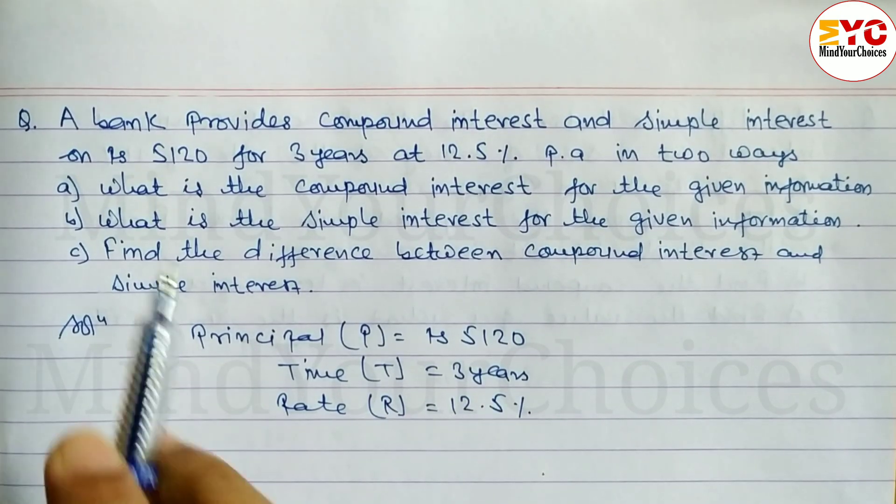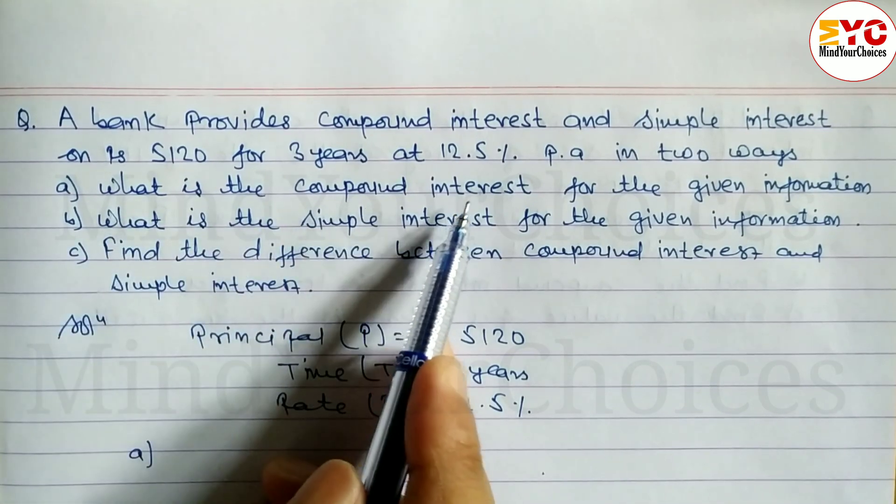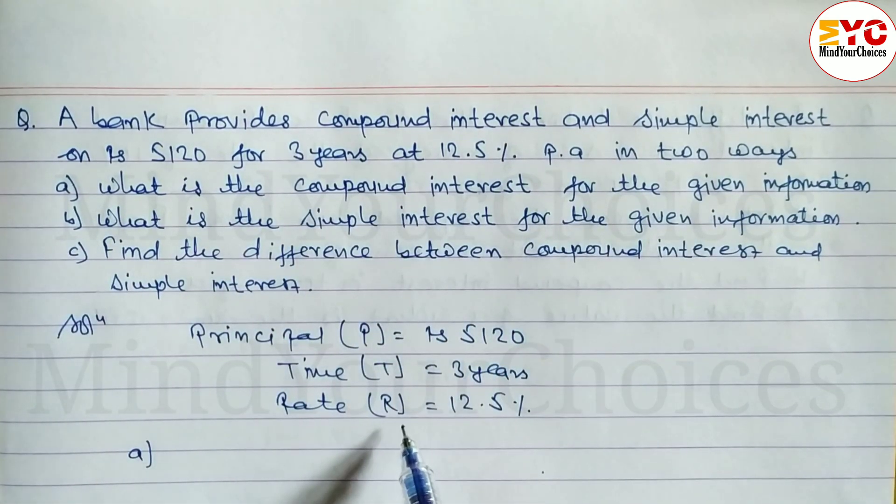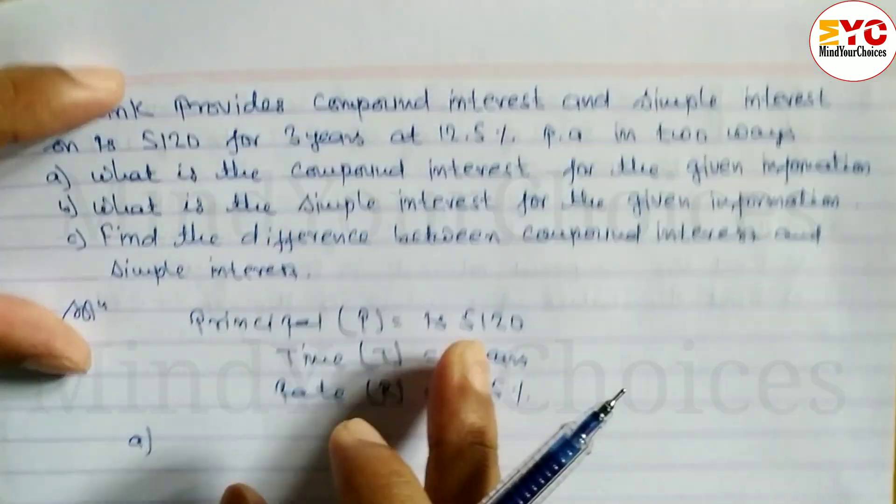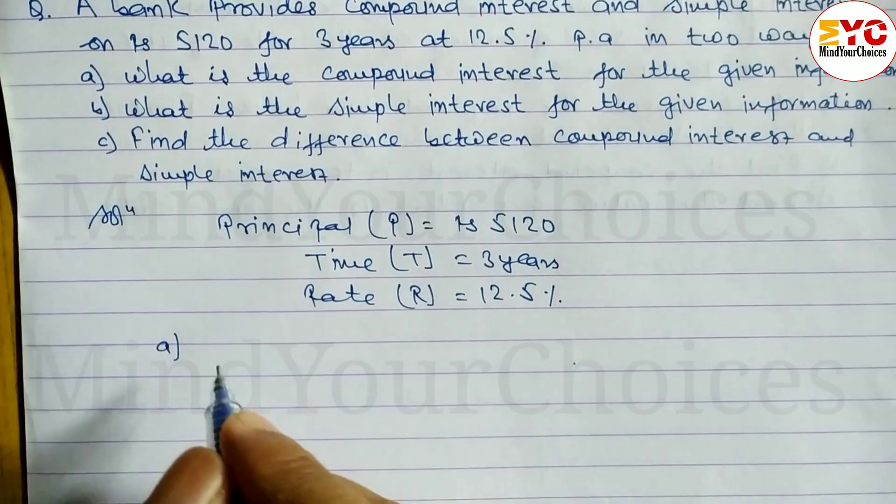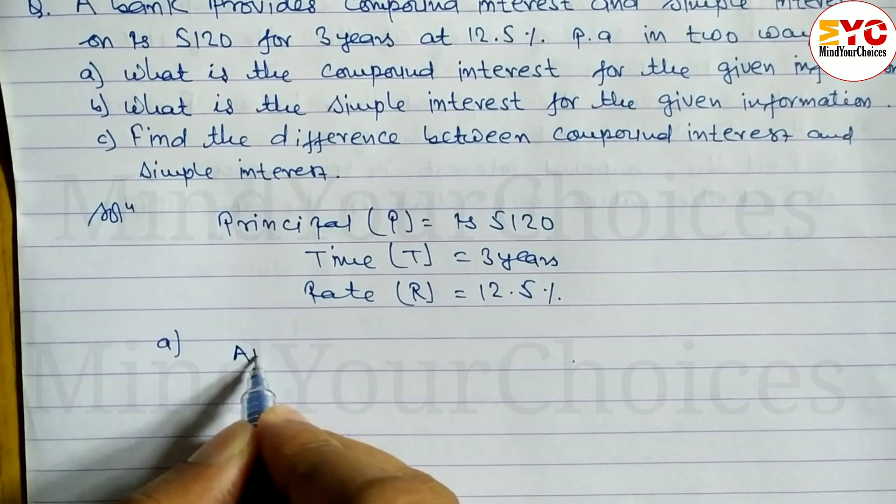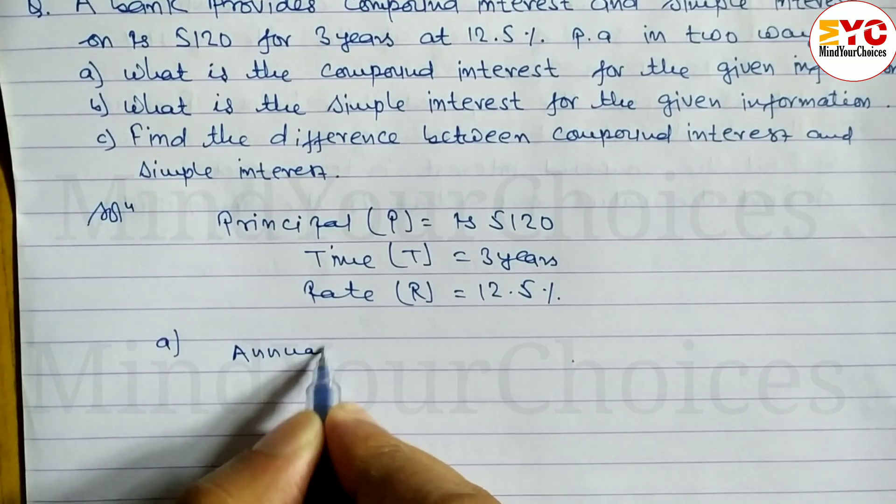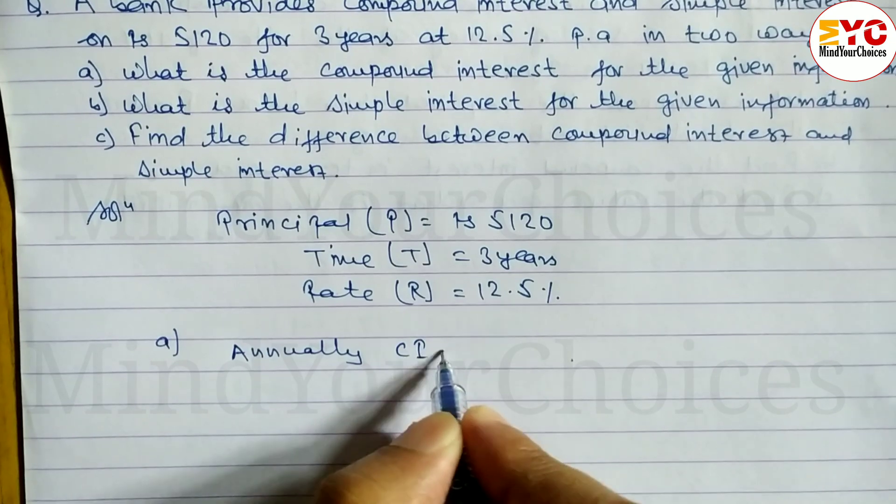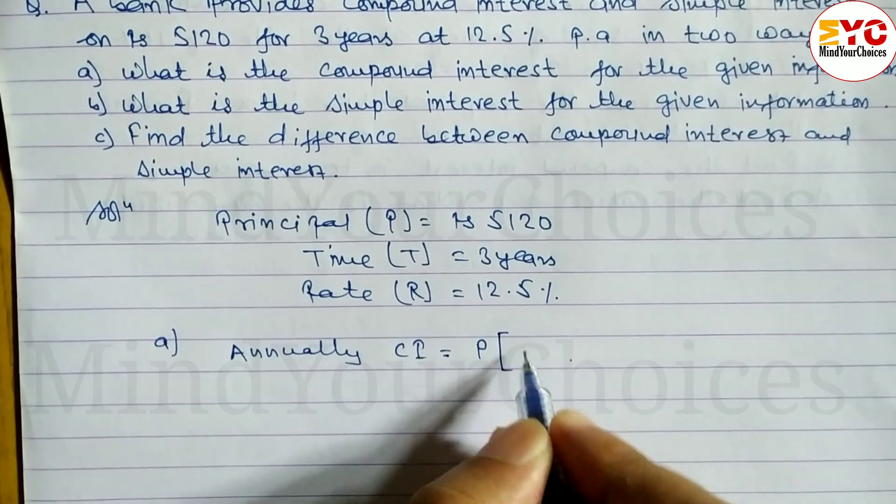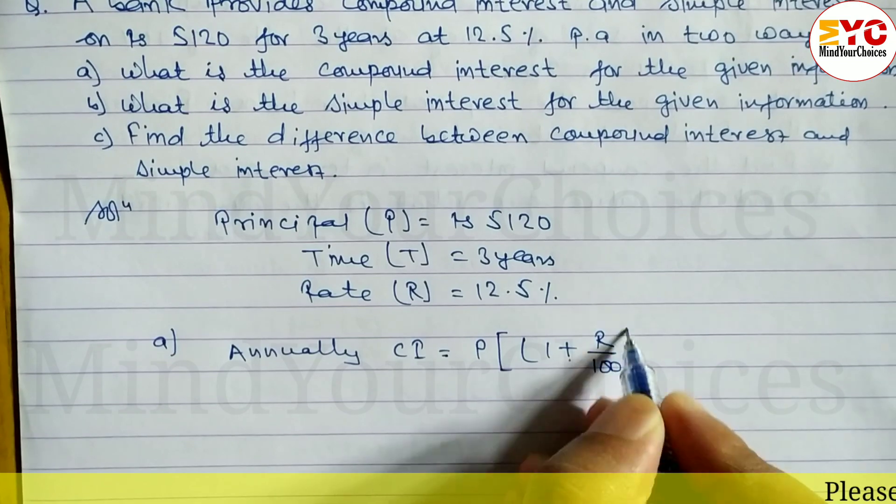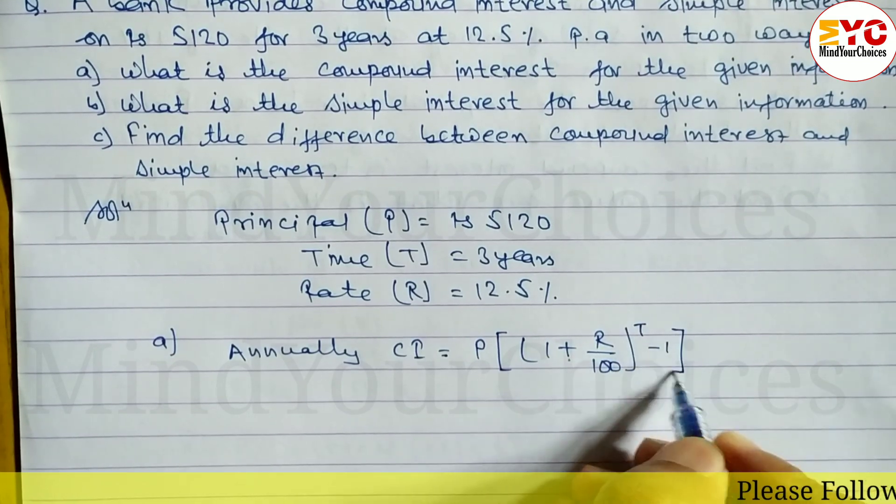Question A: What is the compound interest for the given information? We need to find the annual compound interest. The formula is CI = P[(1 + R/100)^T - 1].